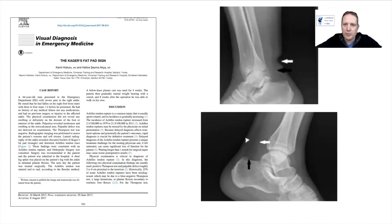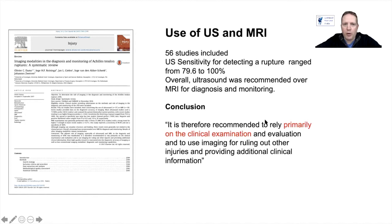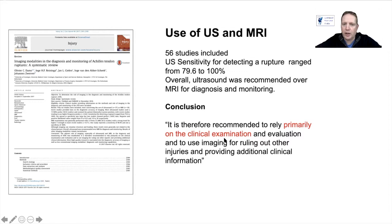For diagnosis you can do an X-ray, especially if you are worried about an avulsion. In our practice we recommend a lateral X-ray for all patients to ensure this. You can often see a palpable gap and the loss of definition of Kager's fat pad, though this has a low specificity and sensitivity. Regarding ultrasound and MRI — this is not ubiquitous to every unit. A review of 56 studies found sensitivity of detecting rupture ranging from 80 to 100%, and ultrasound was seen as better than MRI for diagnosis and monitoring. They concluded that primary reliance should be on clinical examination, with imaging used for ruling out other injuries and providing additional clinical information — and I would agree with this.